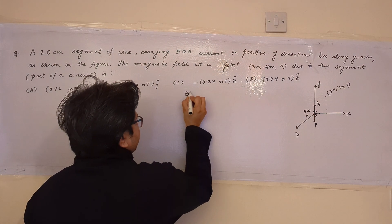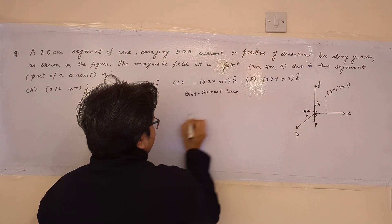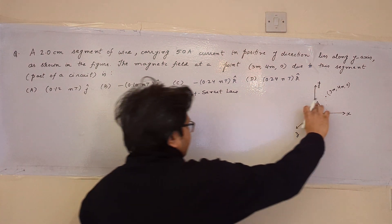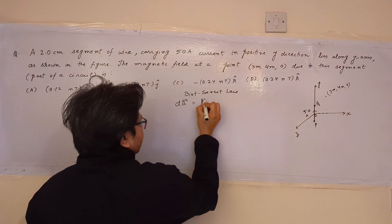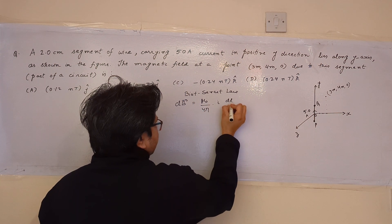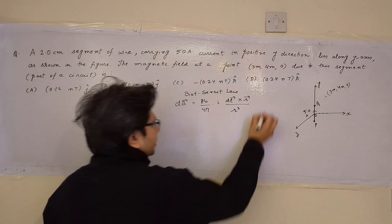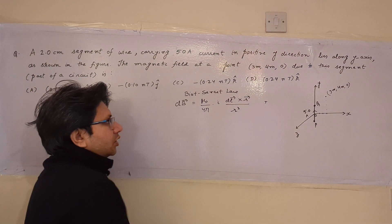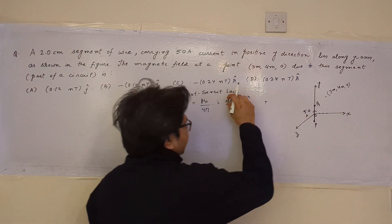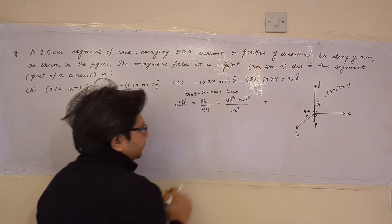According to Biot-Savart law, we can calculate the magnetic field due to a small segment of wire at a certain point. The formula is: dB = (μ₀ / 4π) · (I dl × r) / r³ tesla. This is the formula to calculate the magnetic field due to a segment of wire having length dl at a certain point having position vector r.